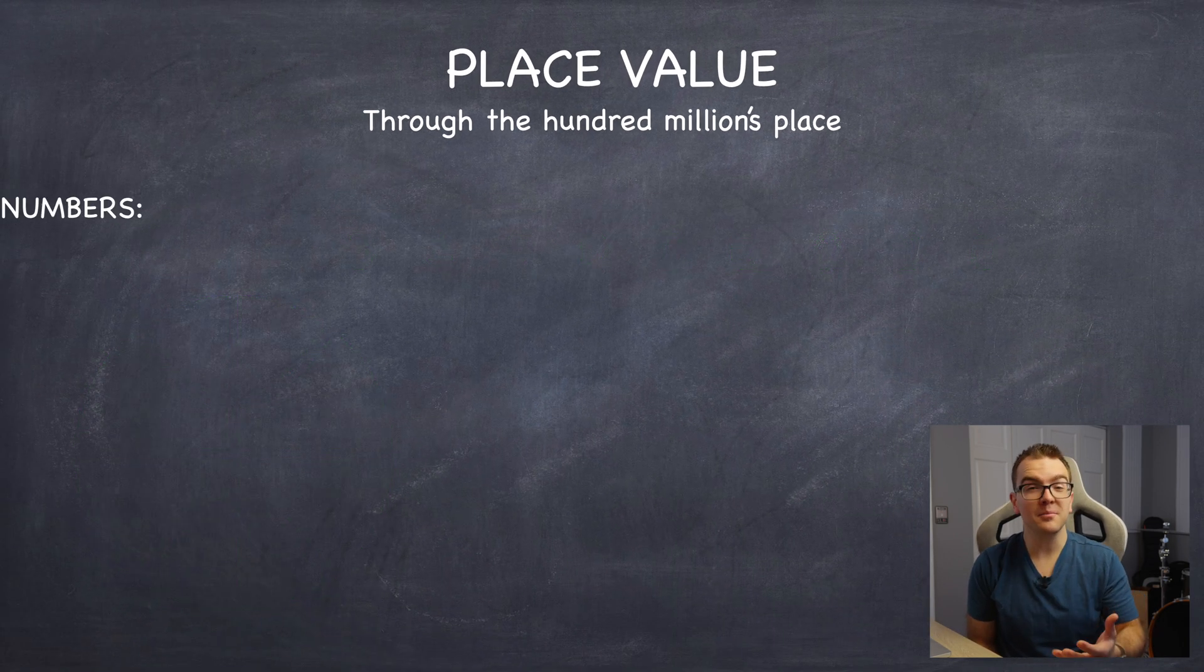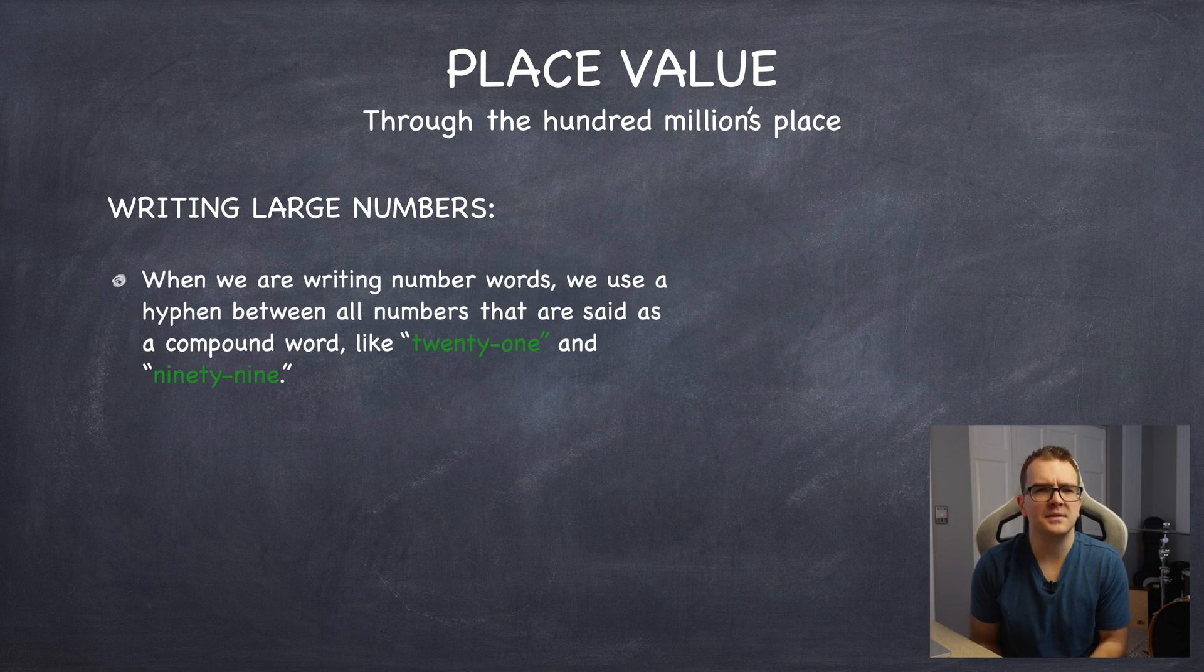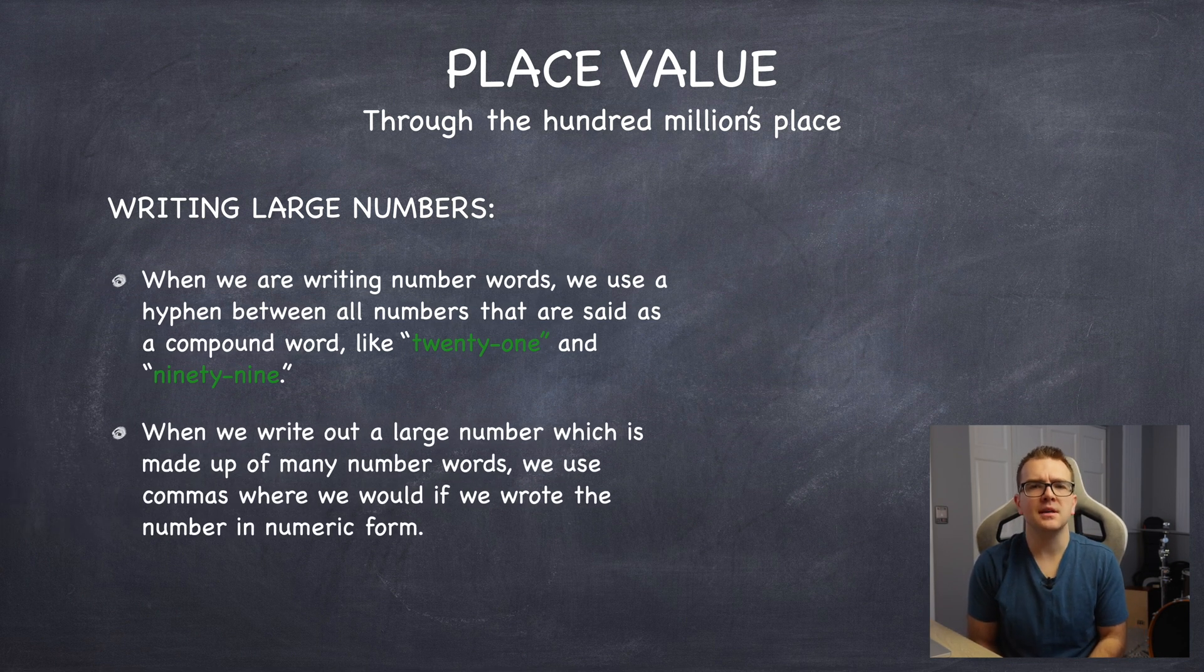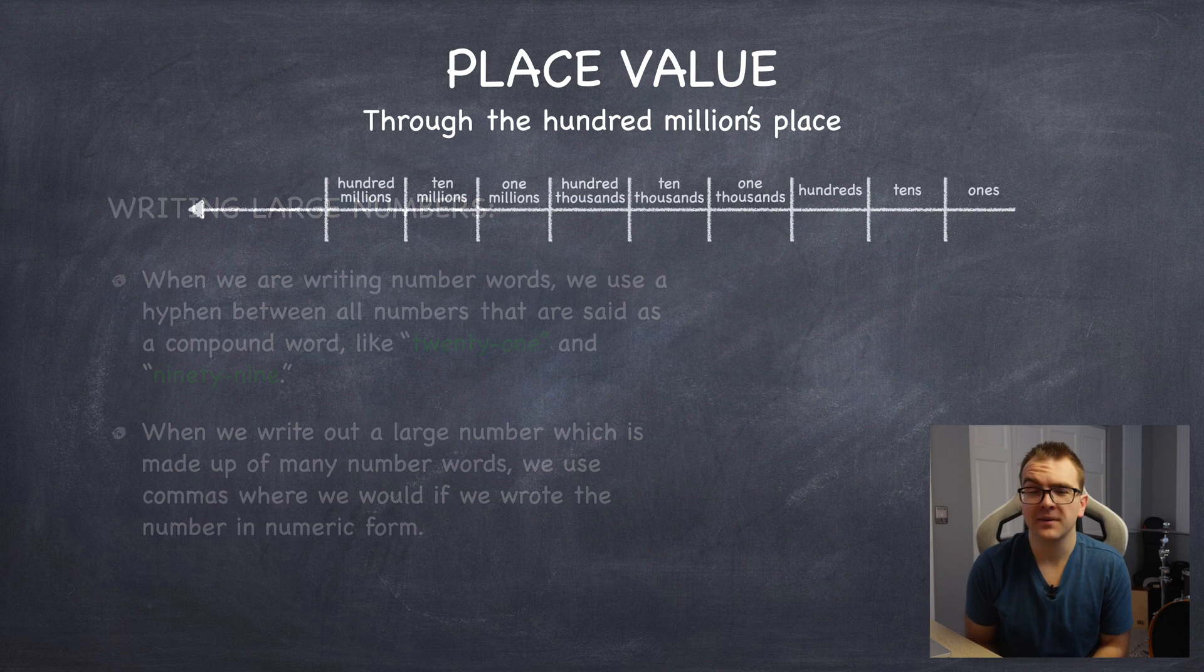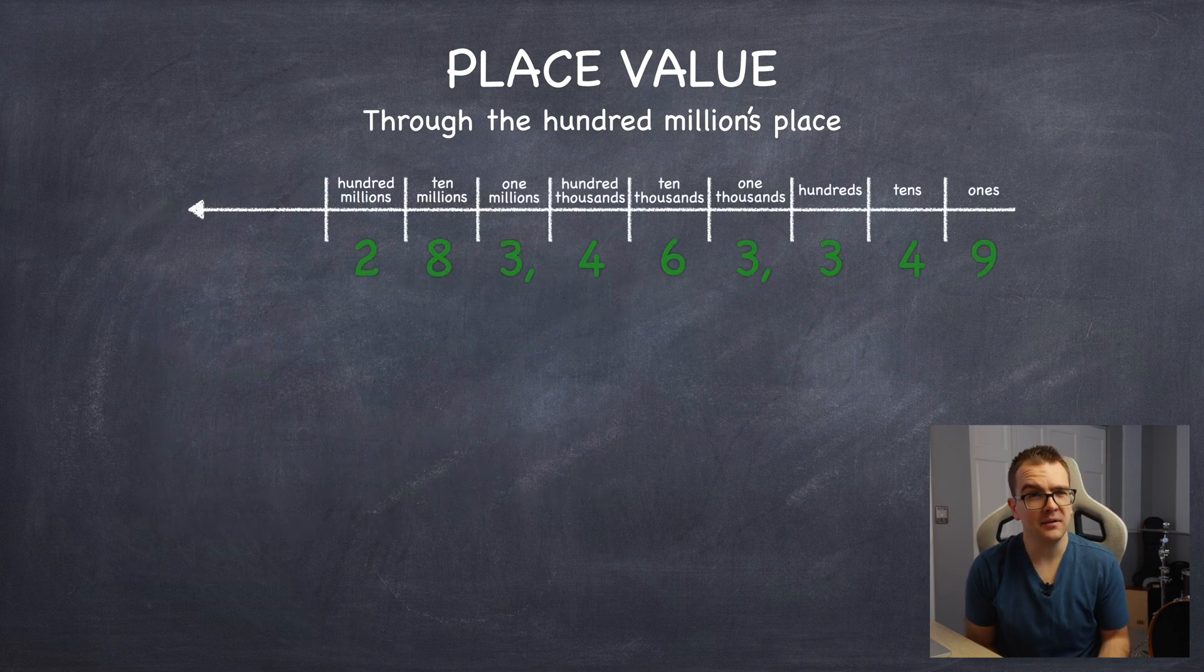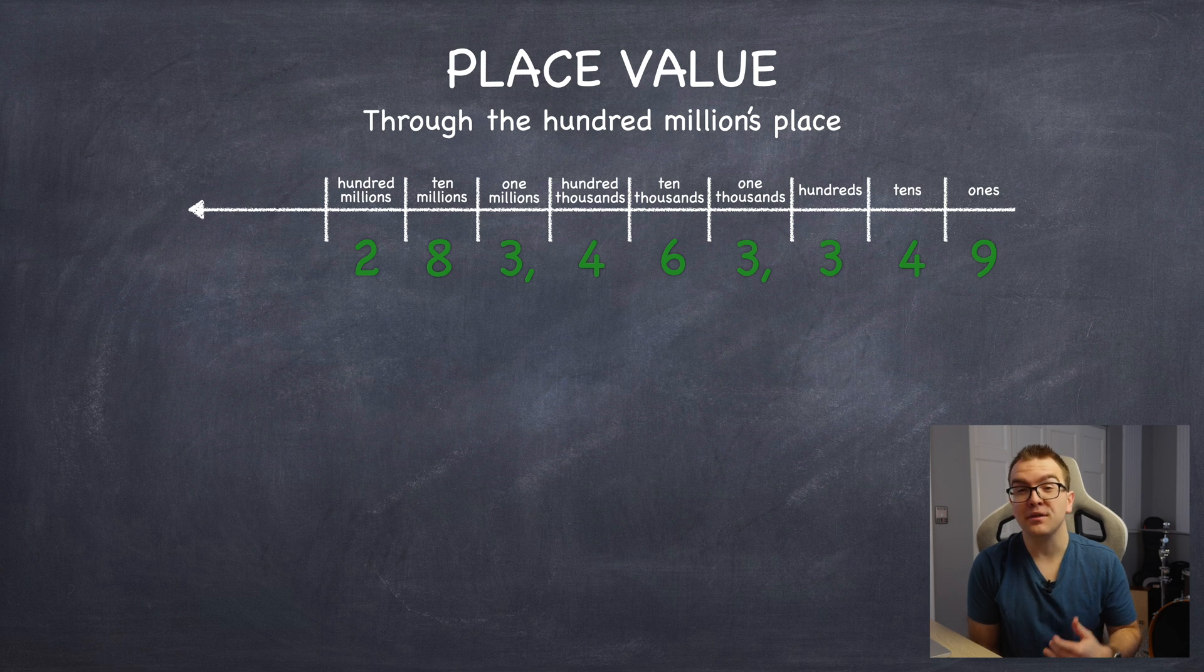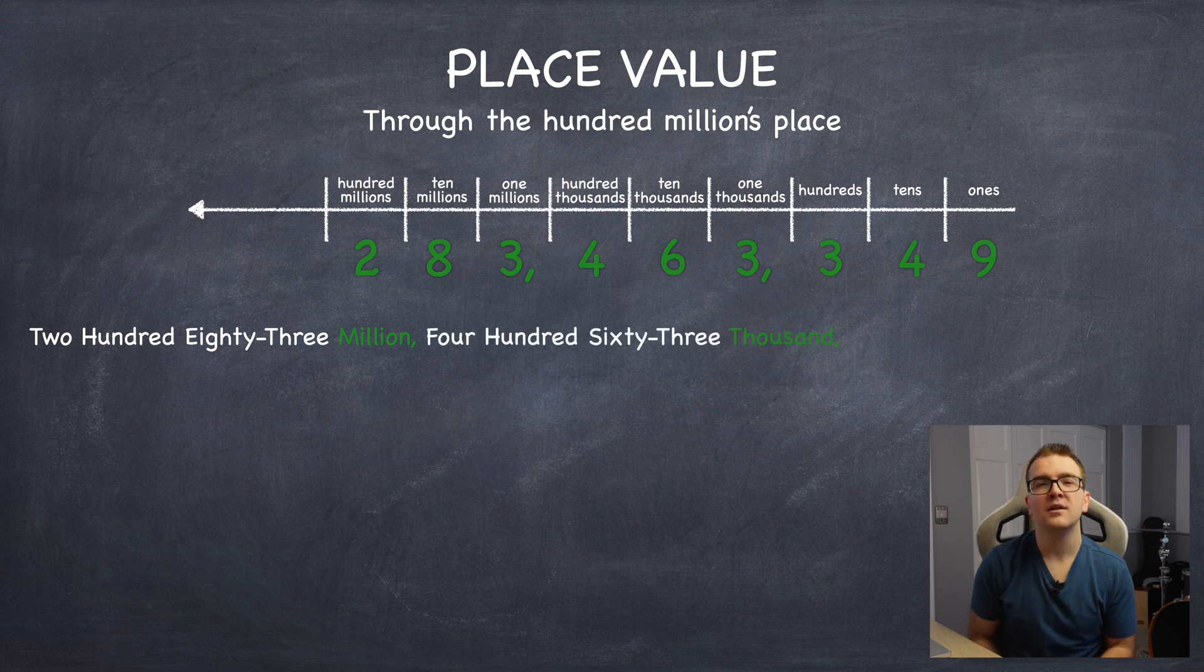Now, when writing a number word, we typically want to use a hyphen with the tens and ones place, no matter where it is. And we also use commas in the word as we would when writing out the number. For example, if we had 283,463,349 basketballs, here's how we would write it out.